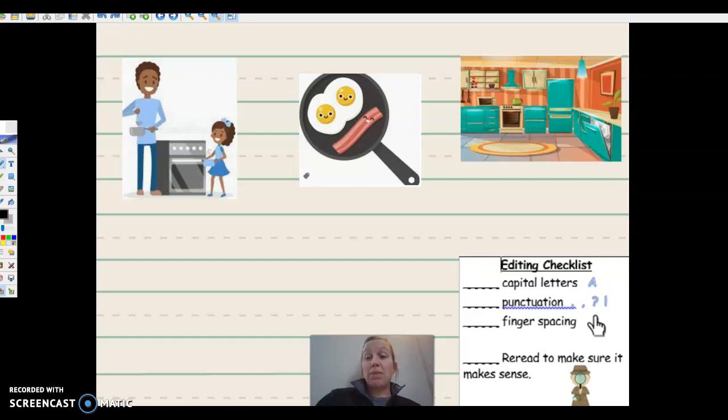On this slide, I see three pictures. I see a picture of a dad. I see a picture of something being cooked. And I see a picture of a kitchen. What would be a good sentence for these three pictures? Maybe I could say, instead of starting with the dad, maybe I could start with a dad.